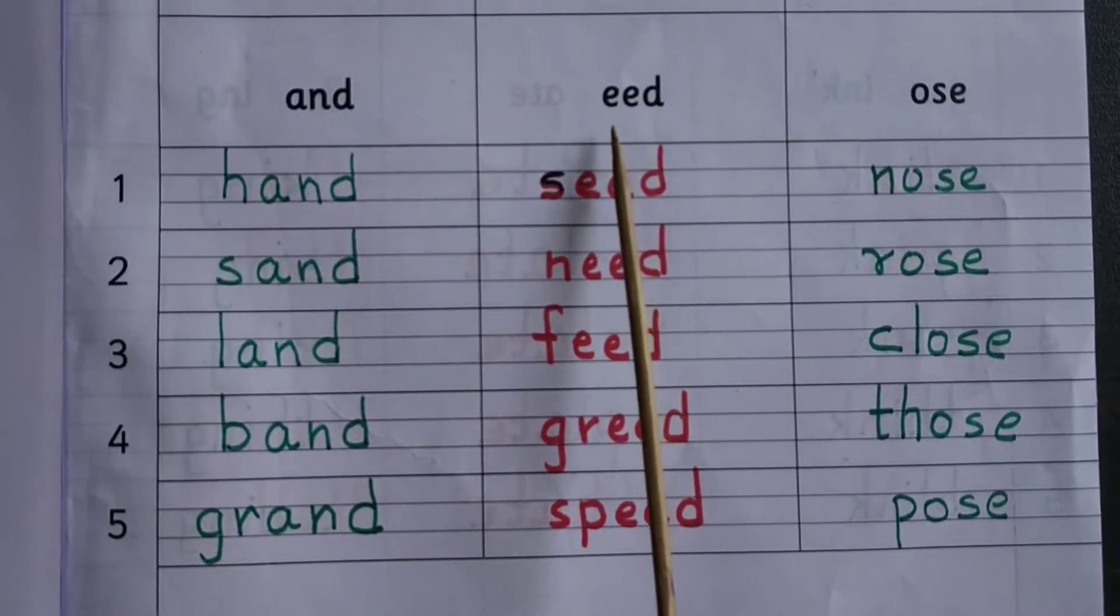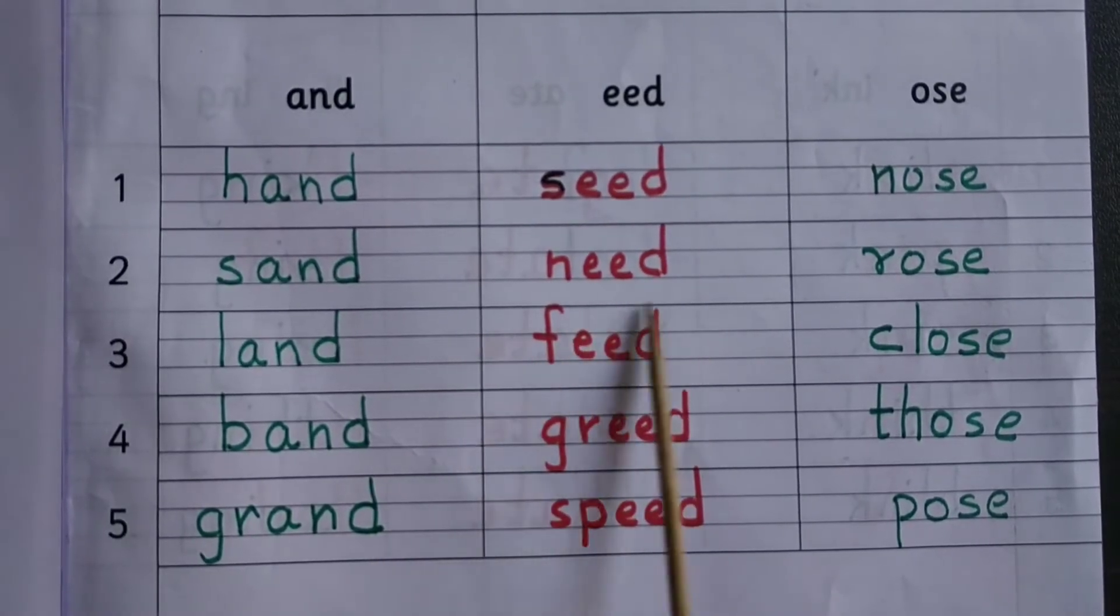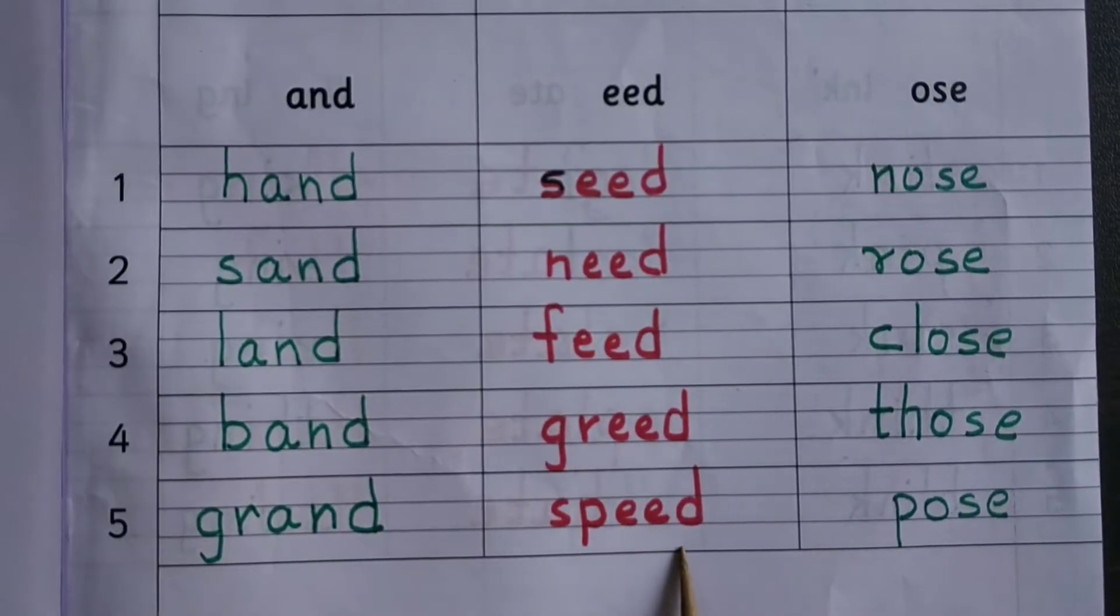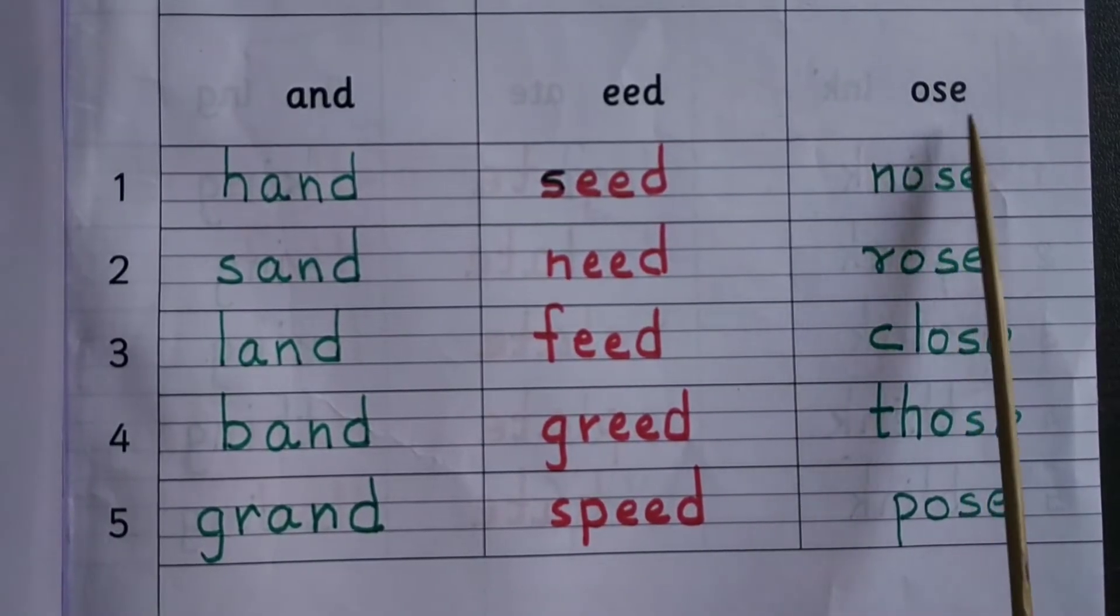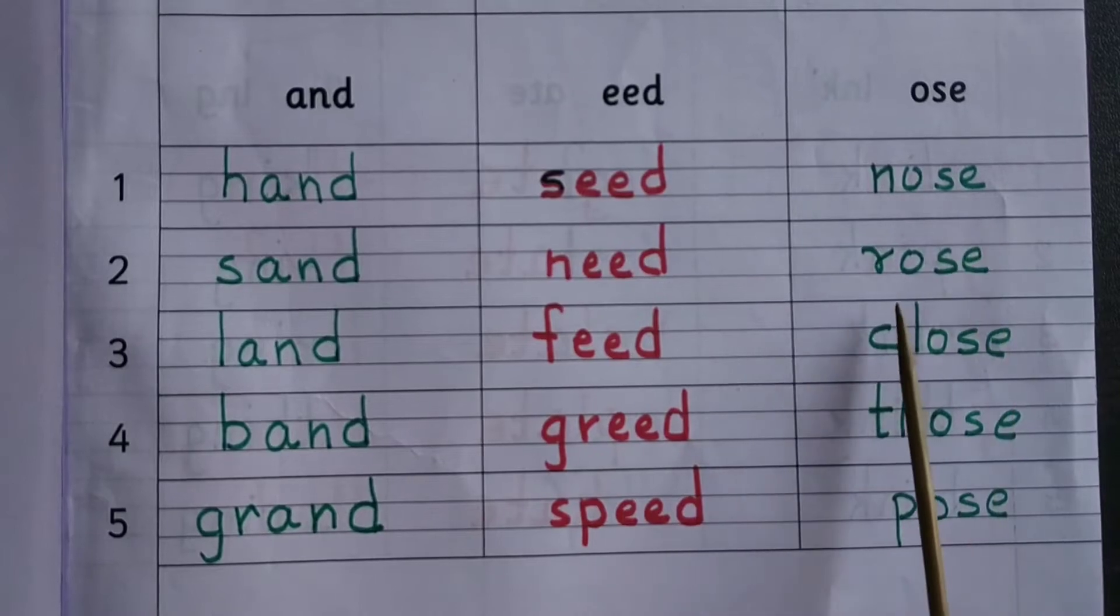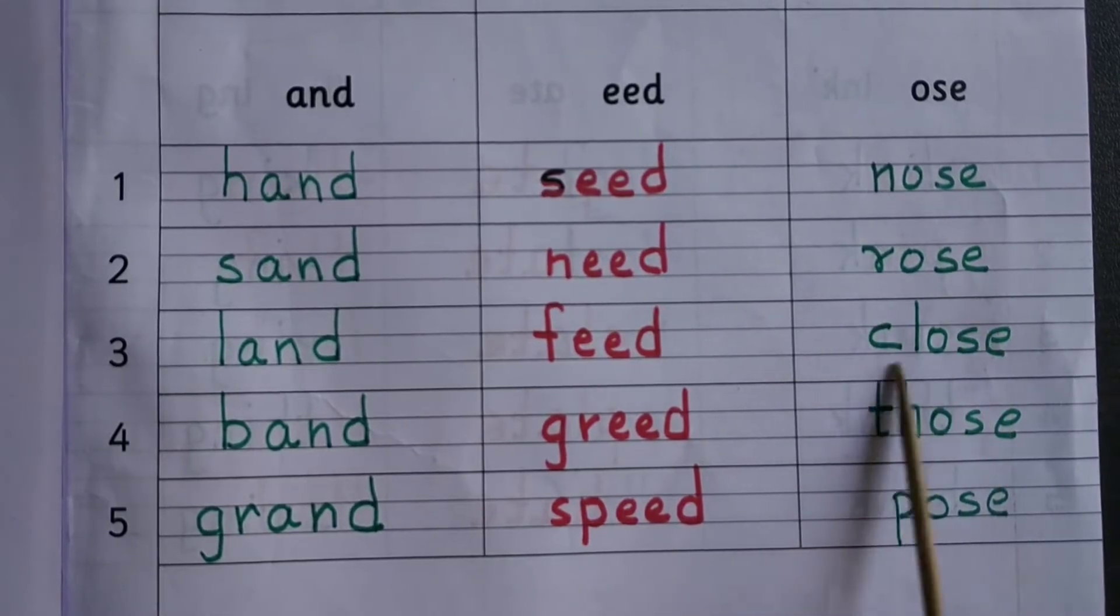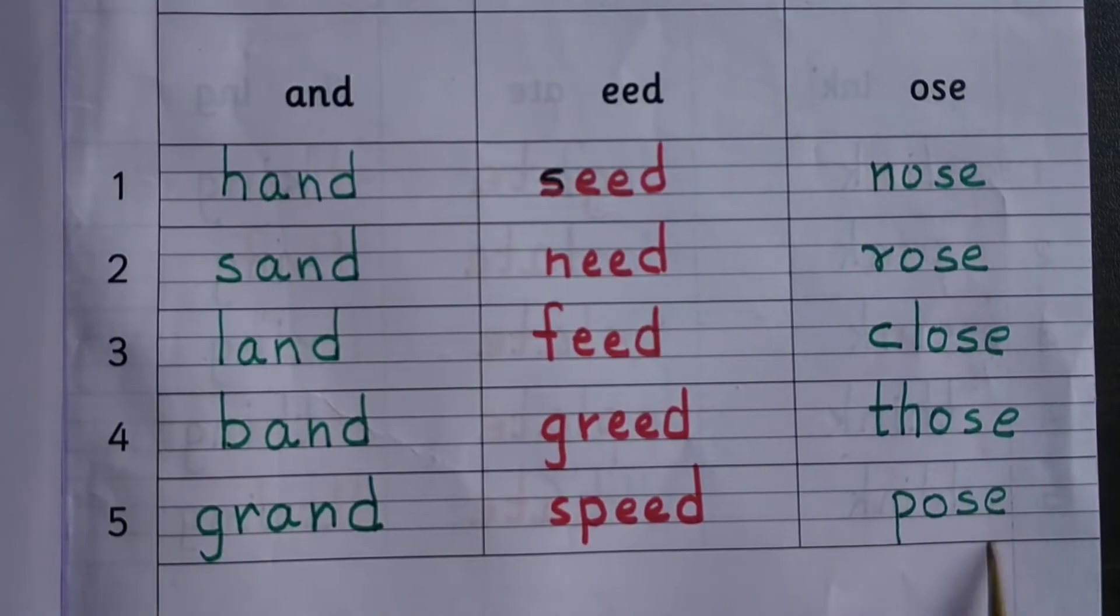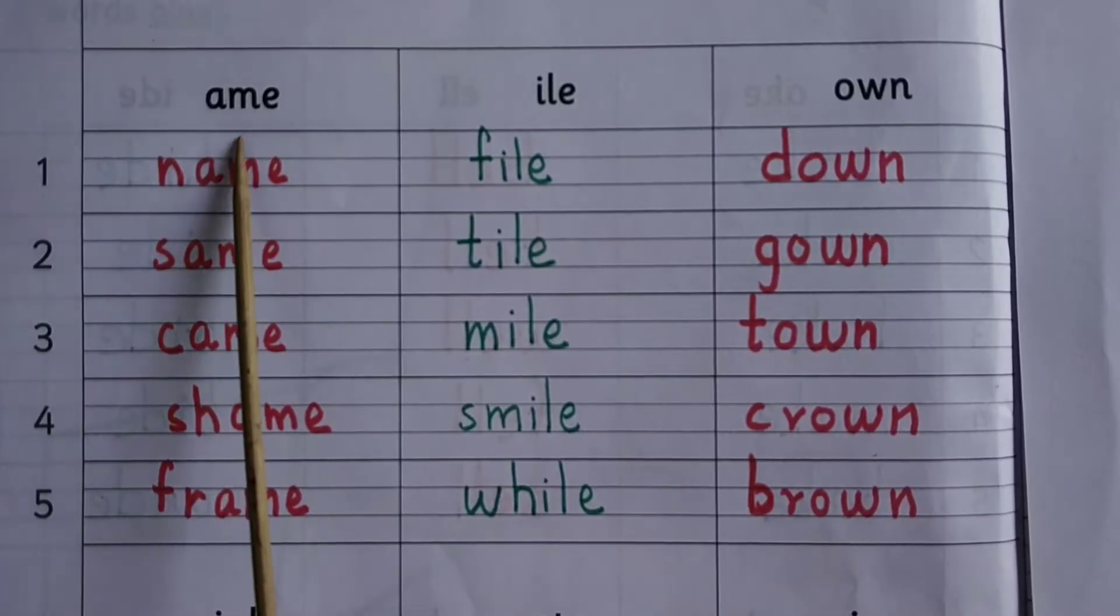E-E-D: seed, need, feed, greed, speed. O-S-E: nose, rose, close, those, pose. A-M-E: